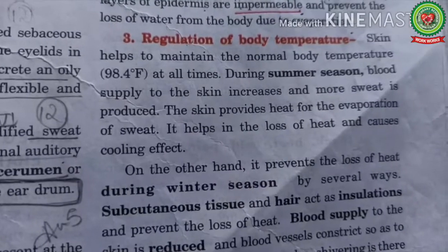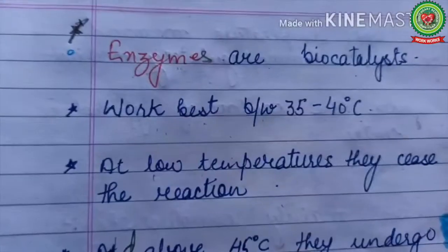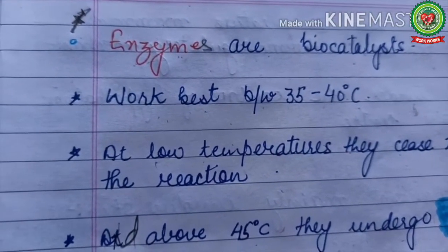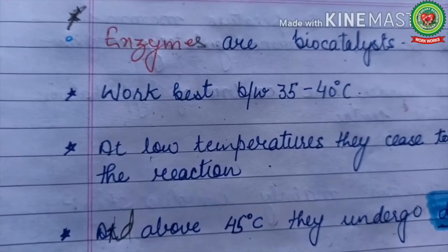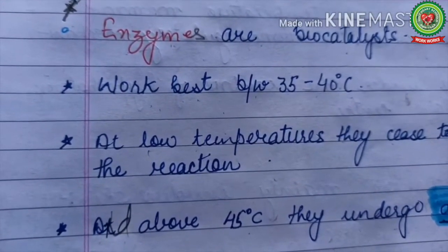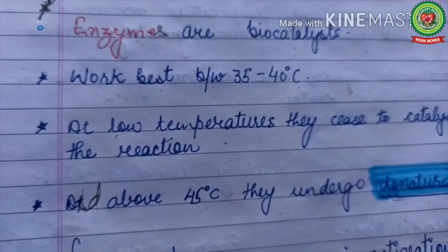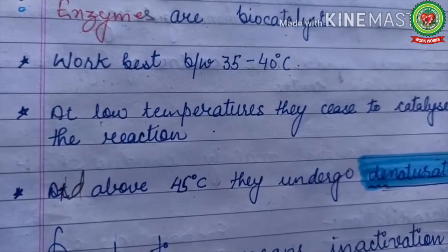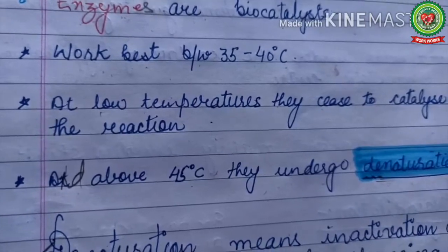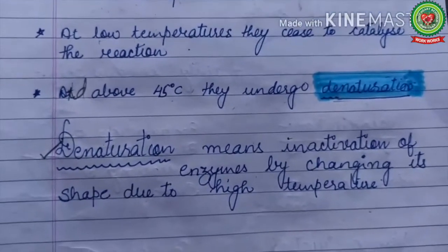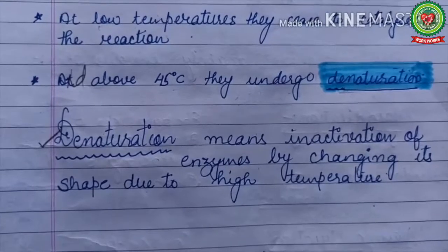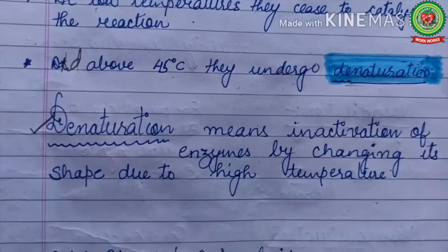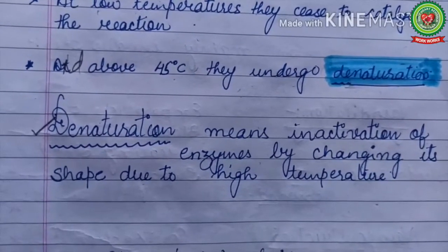Next is regulation of body temperature. Before starting this function, let's introduce a few terms. Enzymes are bio-catalysts and work best between 35 to 40 degrees Celsius. At low temperatures they cease to catalyze reactions and become functionally inactive. Above 45 degrees Celsius they undergo denaturation — the inactivation of enzymes by changing their shape due to high temperature.